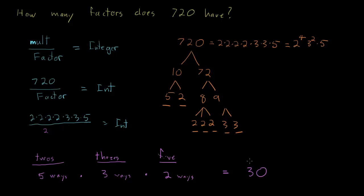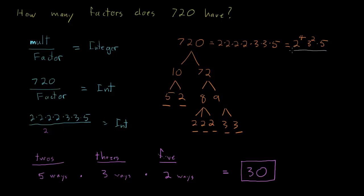Five times two is ten, times three is thirty. So it turns out there are exactly 30 factors of 720. The main thing I wanted to emphasize is this reasoning — prime factoring a number so that we can make deductions about its factors. But for this exact type of question it can be useful to have this in formula form, so let's put everything we just did into a formula for the number of factors of a number.